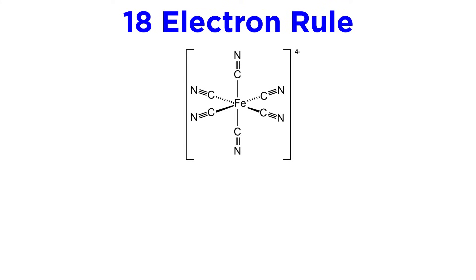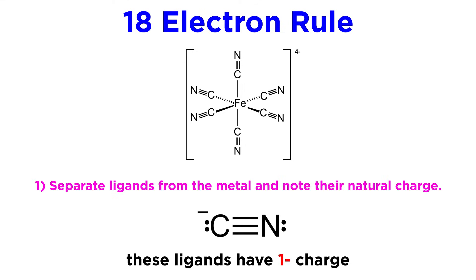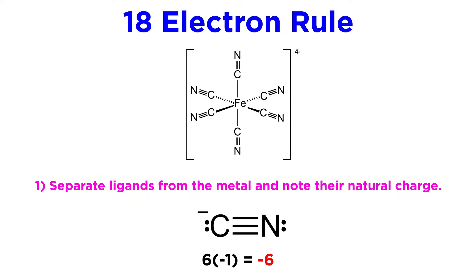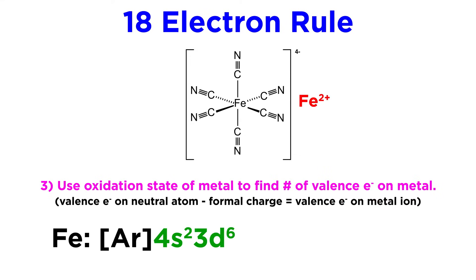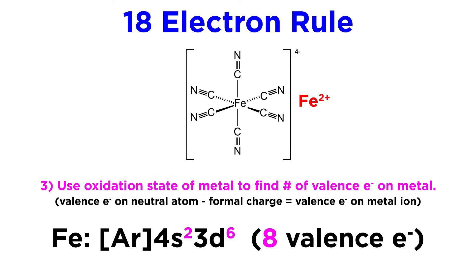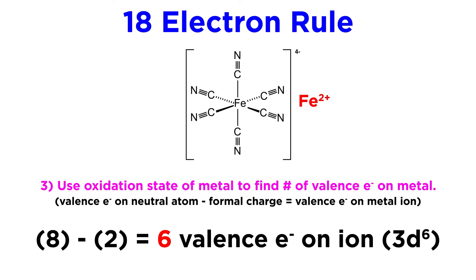We have an iron atom and six cyanide ions, which make a complex that has an overall charge of four minus. Each cyanide ion is CN minus — there is a triple bond between the atoms and a lone pair on each, which leaves carbon with a negative charge. There are six of these for a total of six minus, and the overall charge is four minus, which means that the iron atom must have a charge of two plus, because two plus negative six equals negative four. A neutral iron atom has an electron configuration ending in 4s2 3d6, so it has eight valence electrons, meaning the two plus cation must have only six valence electrons. So iron contributes six electrons to the total count.